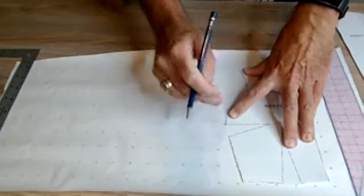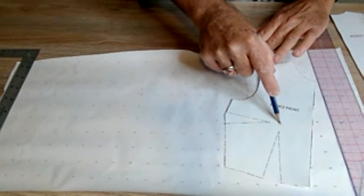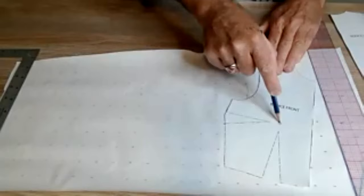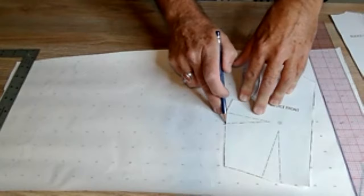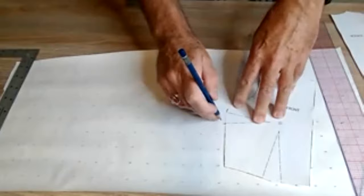We're going to come down here to this first dart leg. I'm going to put my pencil right here on the dart point and I'm going to move that bodice. See, all I did was just pivot that bodice around.